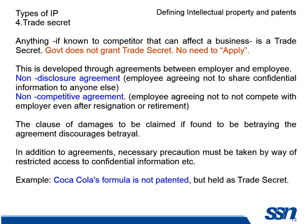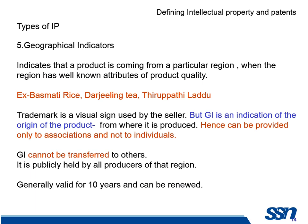Another one is geographical indicators (GI). This indicates that the product is coming from a particular region, which may be a reason for its quality. For example, Basmati rice, Darjeeling tea, Tirupati laddu, etc. are called geographical indicators — mostly they have the name of the place where the product is available. GI is not given to individuals, only to associations, and the associations cannot sell the GI to anyone. It is generally valid for 10 years.